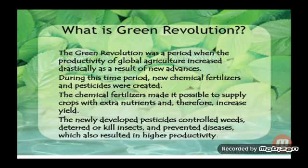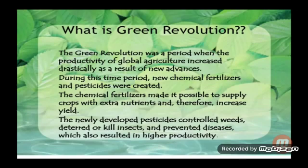The Green Revolution was a period when the productivity of global agriculture increased drastically as a result of new advances. New chemical fertilizers and pesticides were created. Chemical fertilizers made it possible to supply crops with extra nutrition and therefore increase yield. The newly developed pesticides controlled weeds, deterred or killed insects, and prevented diseases, which also resulted in higher productivity.